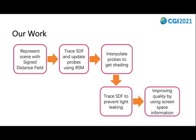Our method's main structure is based on a probe-based GI framework like RTXGI, but with some important differences. Here are the stages of our approach: first, we convert scene geometry to simple delegate primitives called STF primitives, and use them to construct a signed distance field. Then, we use this SDF to perform sphere tracing and sample RSM to update the probes. In the next stage, we interpolate probes to get the result. At the same time, SDF soft shadow tests are employed to prevent light leaking. Finally, we improve the lighting quality using screen space information.